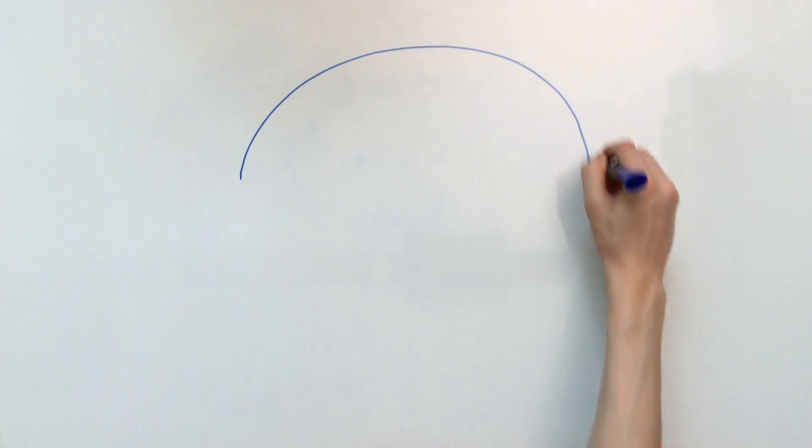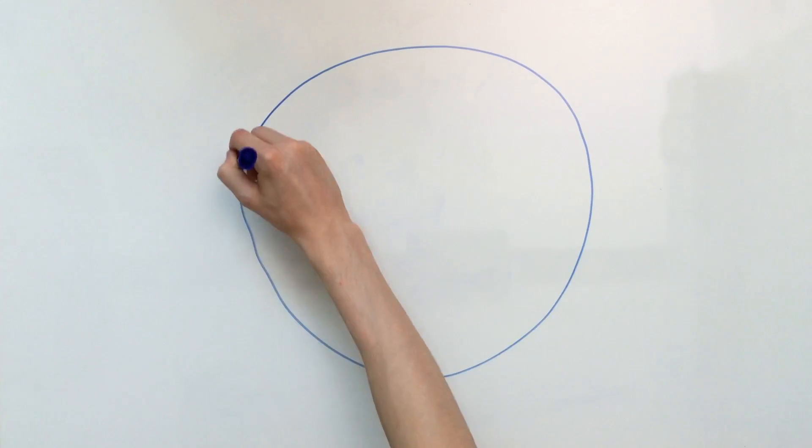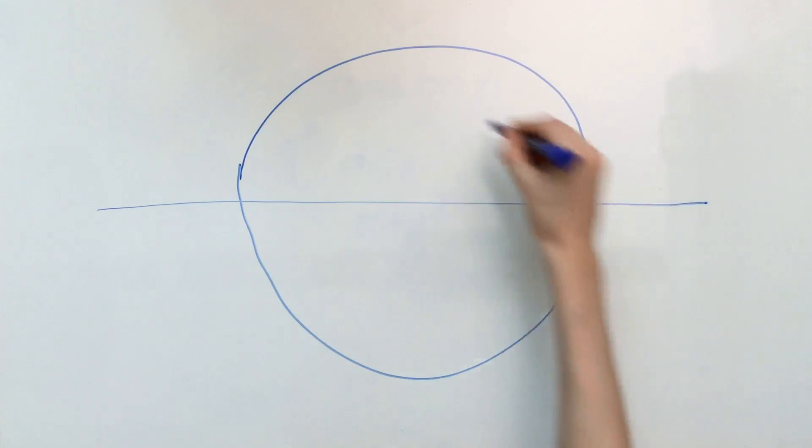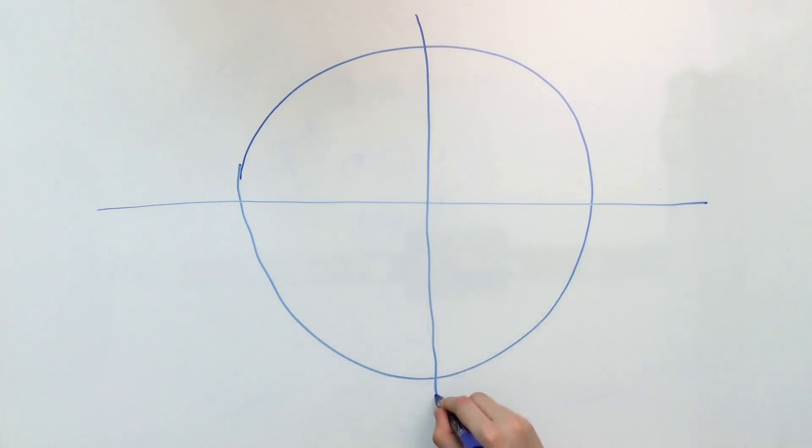So if we just draw a circle here, and I know it won't be like the most perfect circle ever, but it's a rough approximation. So we've got a circle here, and let's just say we draw the coordinate plane through it. So we've got our vertical axis here, and we've got our horizontal axis here.